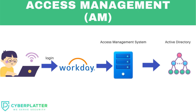Once you enter your ID and password, they are sent to the access management system. The access management system validates the ID and password combination by connecting to Active Directory — the same Active Directory where identity management synced the profile. Once validated, the user is redirected to Workday or the target application. This login and logout functionality is called authentication, and authentication and authorization are handled by the access management system.